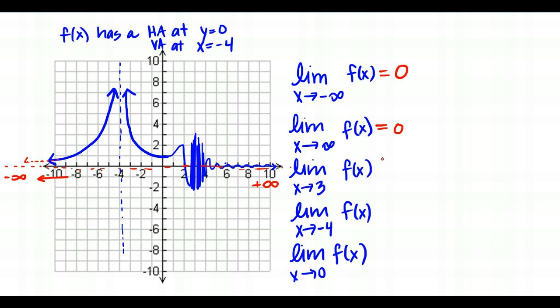As I head toward positive infinity, the function keeps going back and forth but gets closer and closer to 0 every time — that's the definition of an asymptote. A quick note: it is okay to cross a horizontal asymptote. Many students think you can't because you can't cross a vertical asymptote, but that's not true. You can cross a horizontal asymptote but you cannot cross a vertical asymptote.